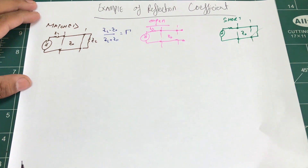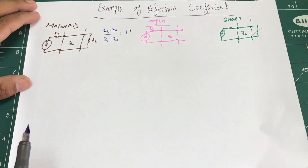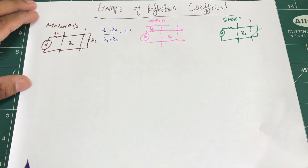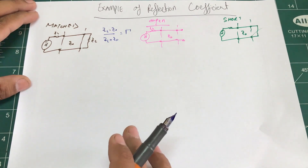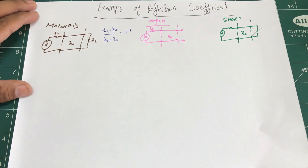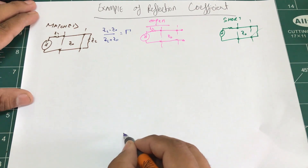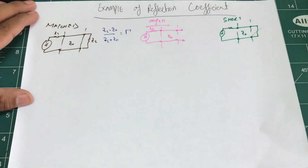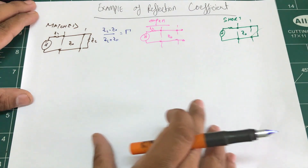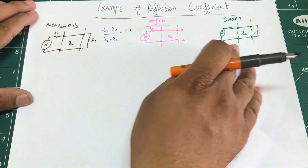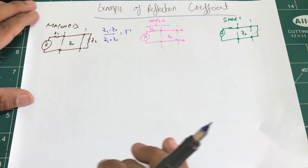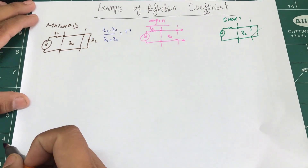Let's look at three special scenarios: matched, open, and short. Think of it like a number line — we're going to plot these three scenarios, and all other scenarios will lie within that range. By looking at these three cases, we're essentially bounding the range of the reflection coefficient.